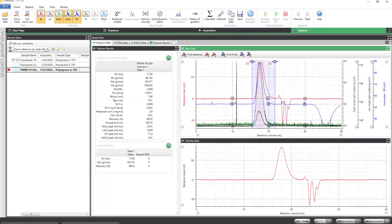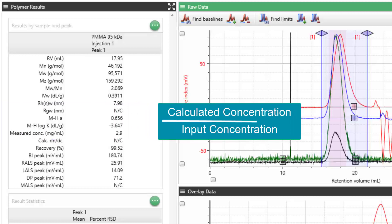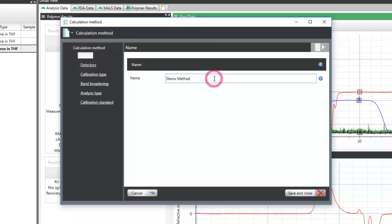In this and the previous analysis type in which a known DNDC value is used, the calculated sample concentration will be compared to the input concentration to provide a percent recovery. Regardless of which one you are using, it is a good idea to edit the method name to reflect the analysis type in use.